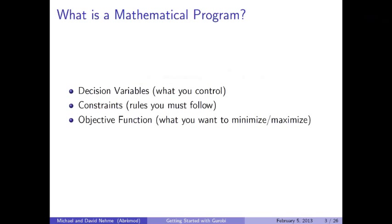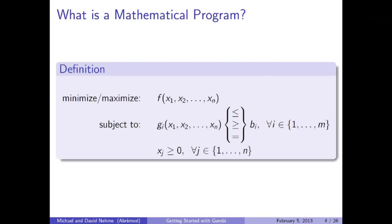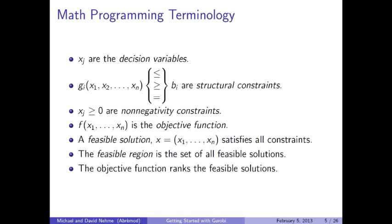In general, a mathematical program computes values for the decision variables that satisfy a set of constraints and either minimizes or maximizes an objective function F. Those constraints can be any combination of equations and inequalities. Most mathematical programming definitions also include non-negativity constraints, which say that variables cannot be negative. The output is a set of optimal values for the decision variables, which guide your decision making.